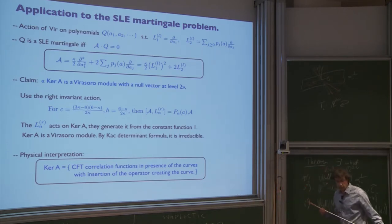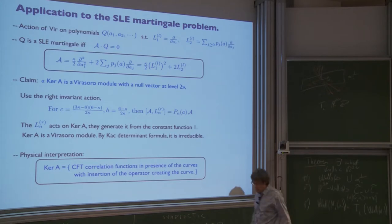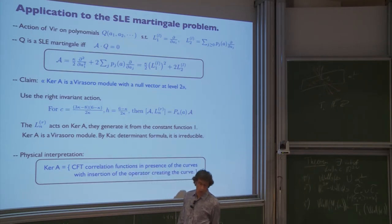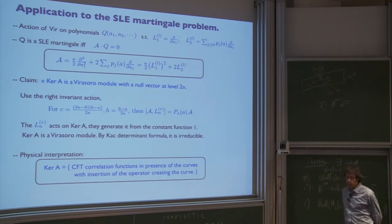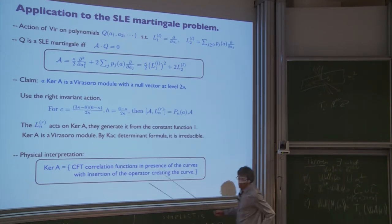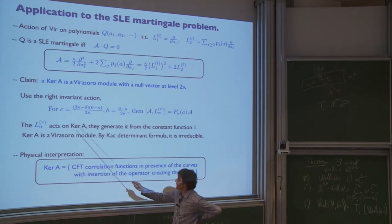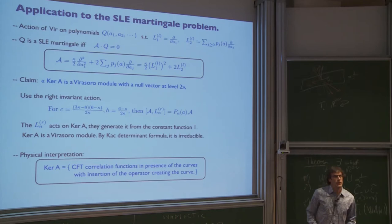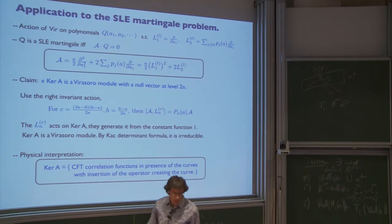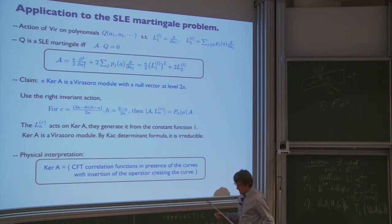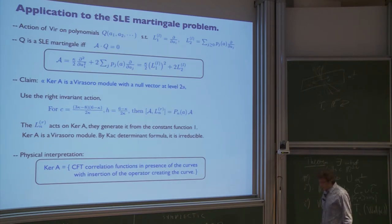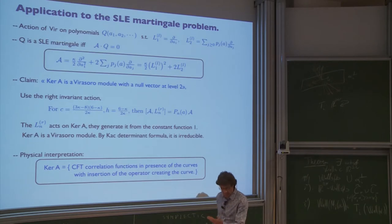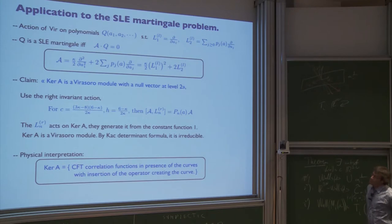This has a simple interpretation in terms of conformal field theory, because this kernel is linked to the correlation function of some field in the statistical model in the presence of the interface. From the central charge, we know what is the central charge of the corresponding conformal field theory or statistical model, and from the value of h we can identify the operator which creates the curve in the model. So that was one thing I wanted to say. I have five more minutes. Then you can go on and on with this construction — this relation between conformal field theory and SLE — as a way to see the relation between probability and conformal field theory, which was usually formulated in terms of algebraic data.